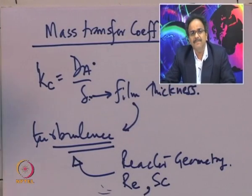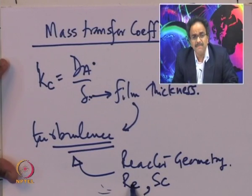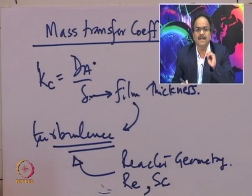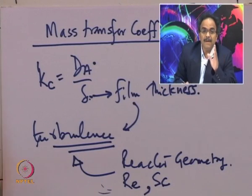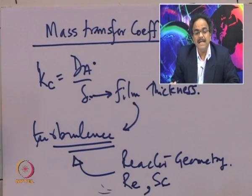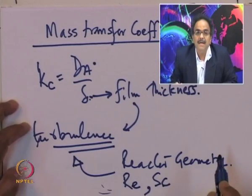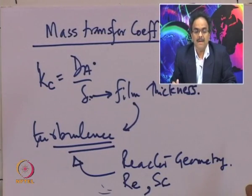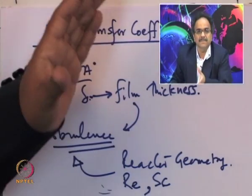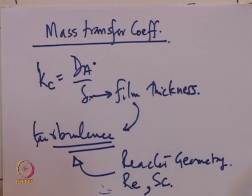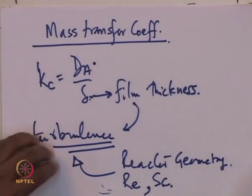Experimenters perform experiments under different conditions, knowing that kc is a function of Reynolds number and Schmidt number. They vary Re and Sc under otherwise similar conditions, determine the functional dependence, and obtain a correlation for the given reactor geometry. For example, a fixed bed reactor has one correlation; a fluidized bed reactor has a different correlation. In every correlation you will see these two dimensionless numbers, but the constants are specific to the reactor of interest.